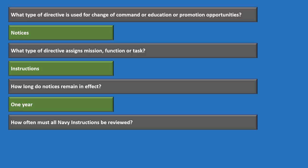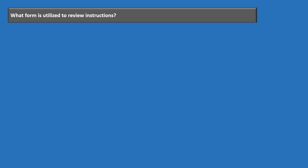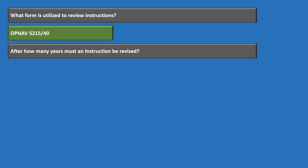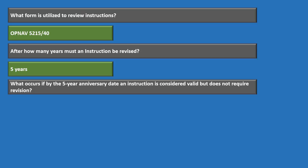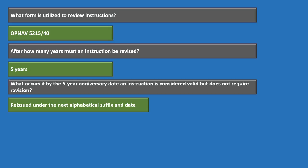Notices remain in effect for one year. All Navy instructions must be reviewed annually. The form used to review instructions is OPNAV 5215/40. After five years, an instruction must be revised. If after five years it is still valid and doesn't require revision, it is reissued under the next alphabetical suffix with a new date.